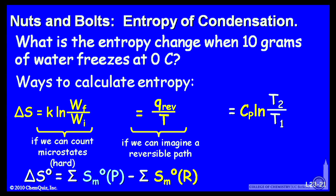And if you can imagine a reversible path, or if you can calculate an enthalpy, which is independent of path, you can use the heat evolved over the temperature. If you know the heat capacity and there's a temperature change, you can use this formula. Or if you find some data, standard molar entropies for your product and reactants, you can use this equation.